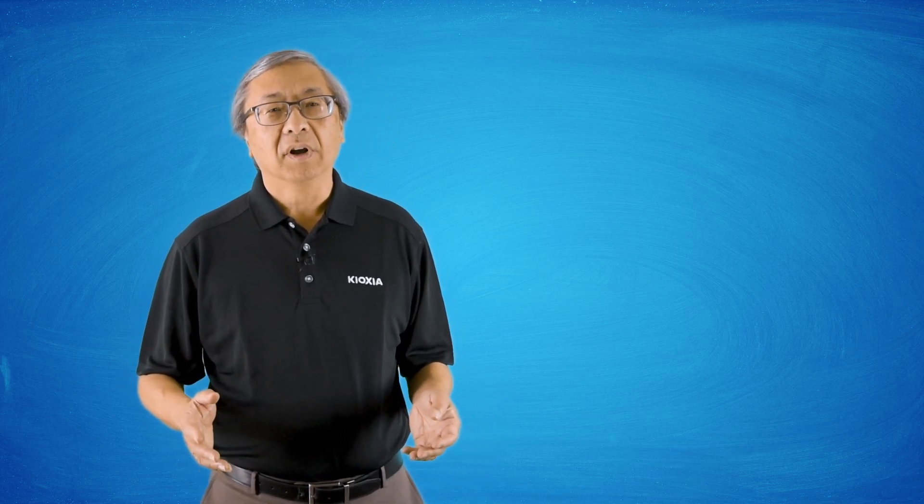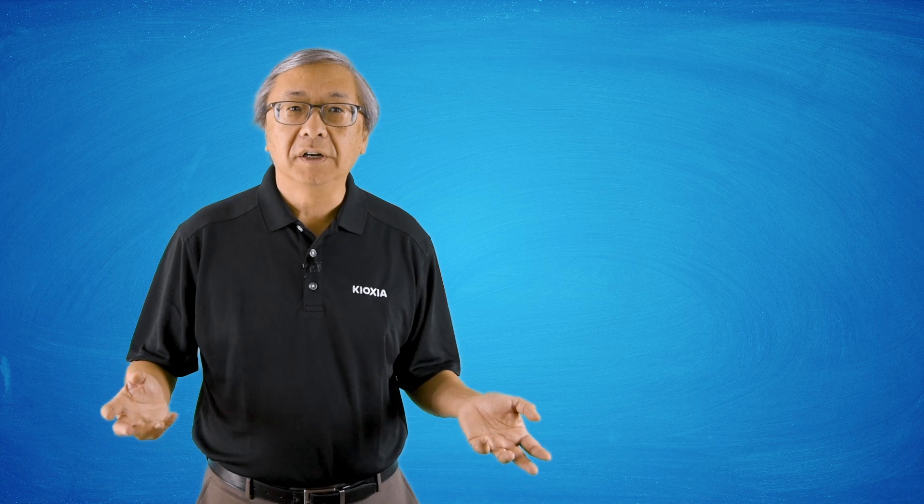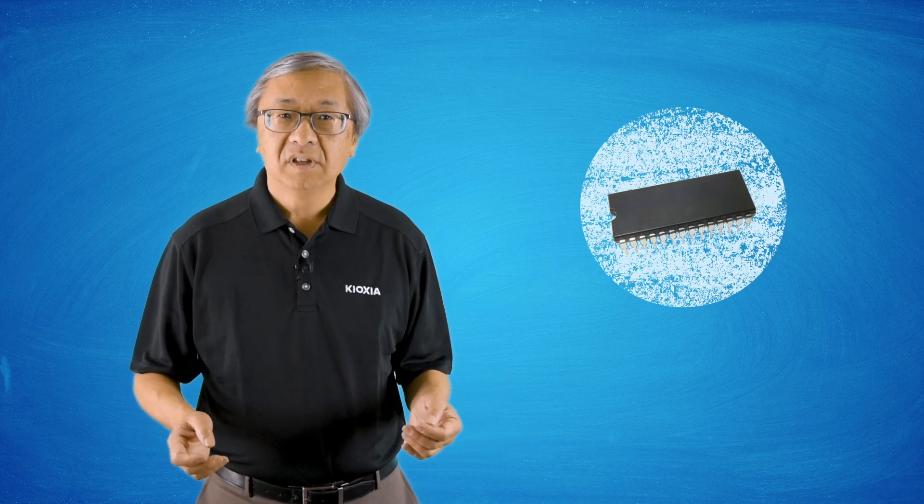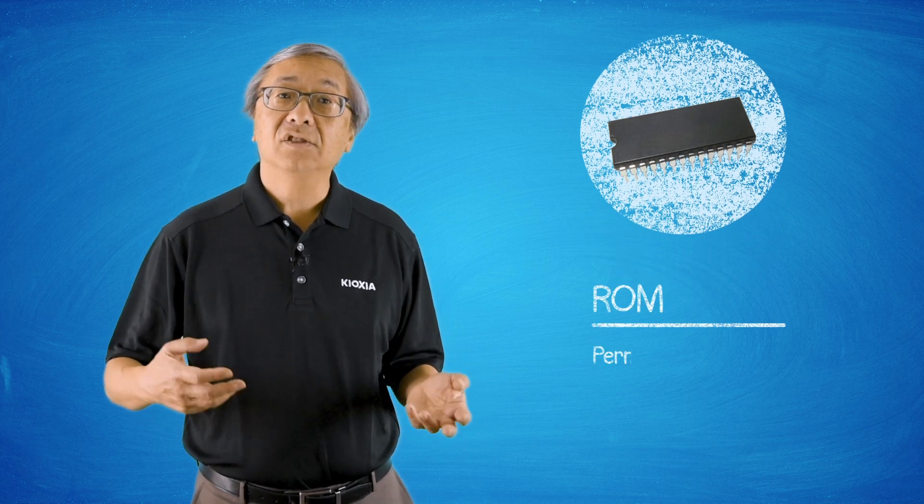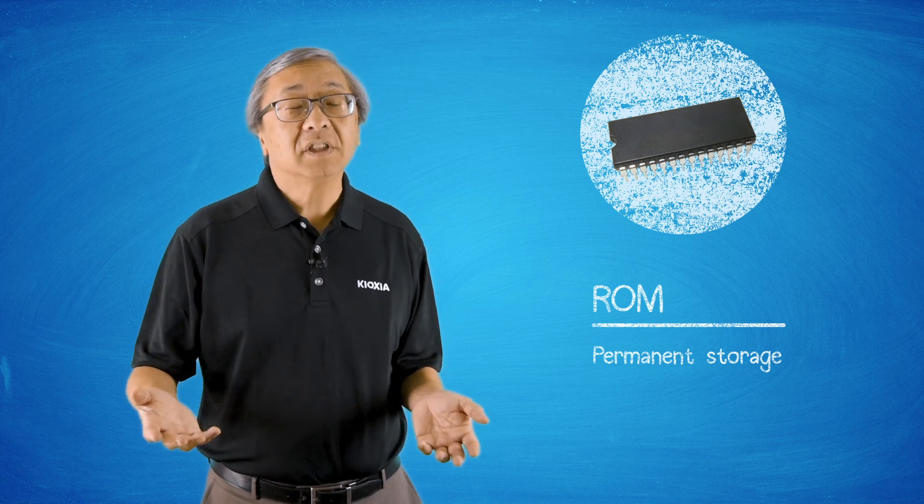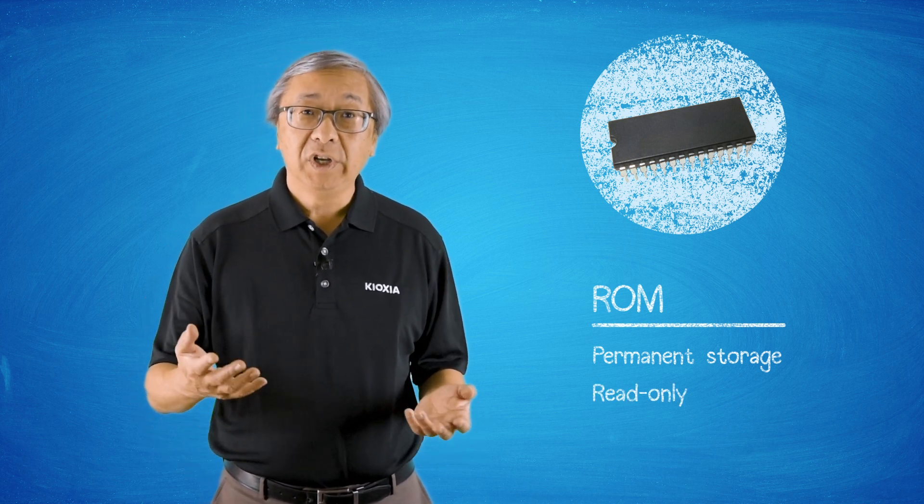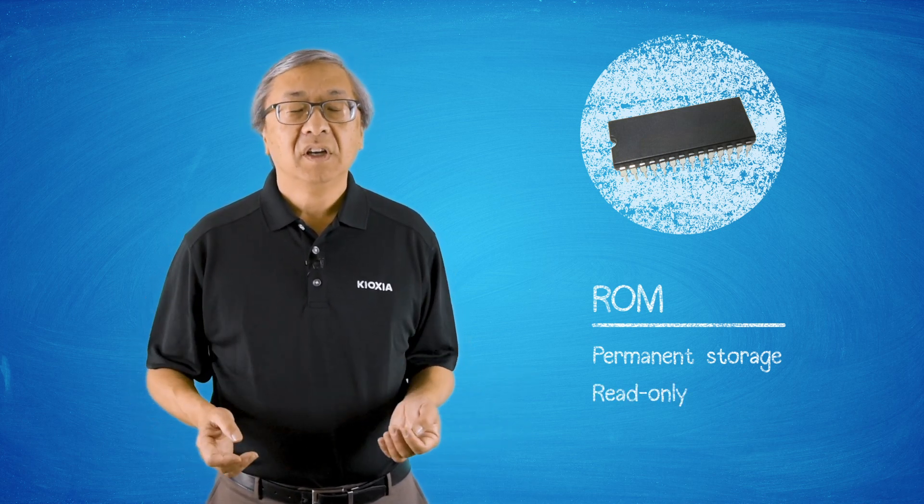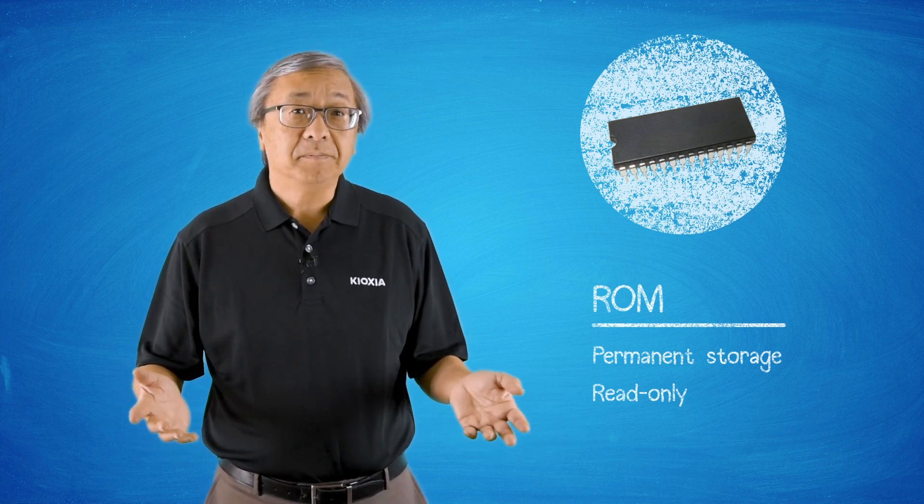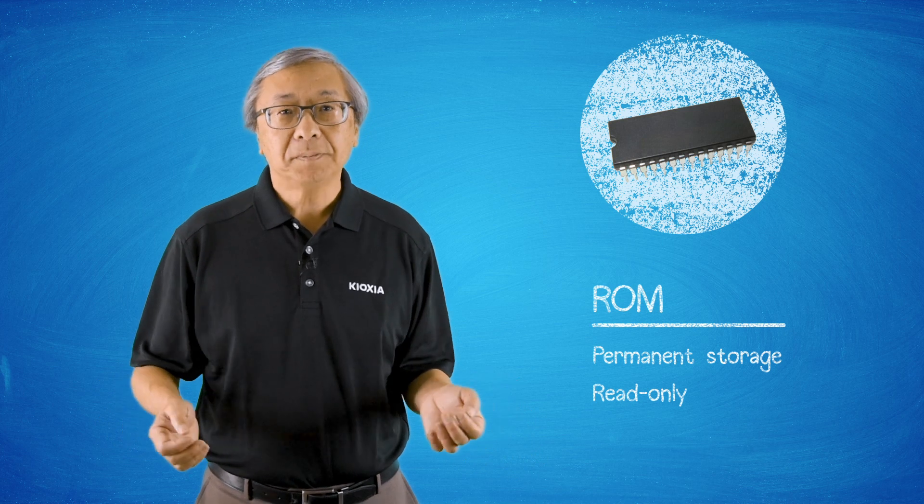There were a lot of different types of non-volatile memory that existed before flash memory was created. The first ones were mask ROMs and that's when the code was actually sent to the manufacturer and manufactured as part of the chip itself. So it was certainly read-only memory, ROMs, but it was unerasable—the user couldn't do anything about it.